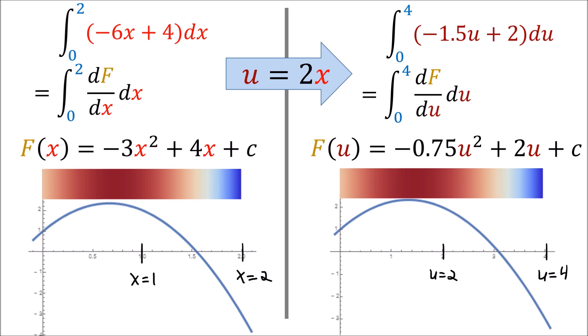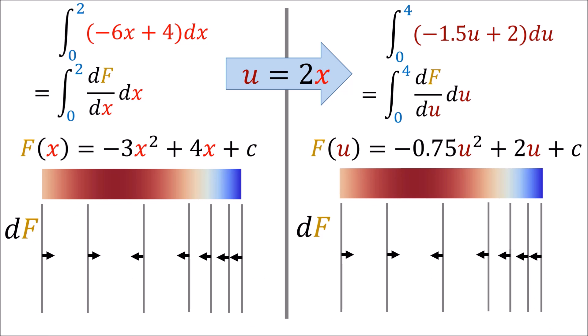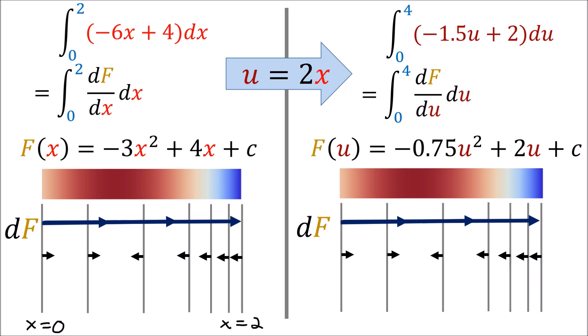Even though the numbers in the integrals look different, the underlying scalar field is the same — the only thing we've changed is the measuring sticks. If f is the same in both cases, then the covector field df is also the same. The path from x equals 0 to x equals 2 is the exact same geometric path as u equals 0 to u equals 4, so the result is negative 4 in both cases.